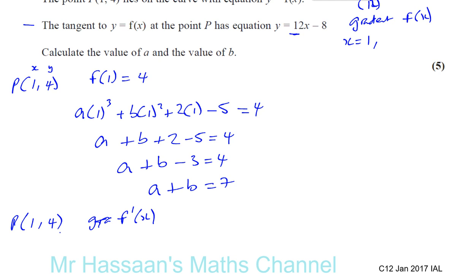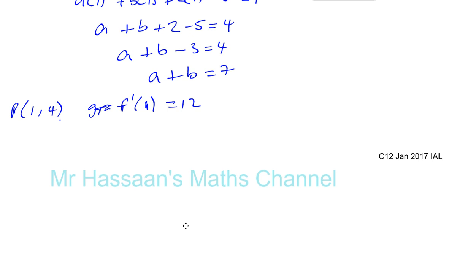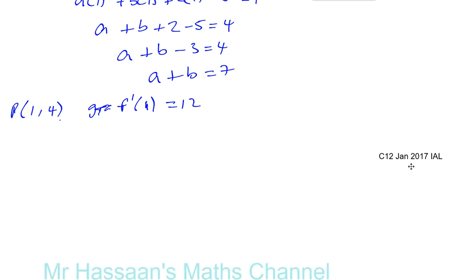If you put 1 into it, you're going to get 12 as your answer. So that's another piece of information that's going to help us to solve this problem. So f'(1) will give us 12 because it has the same gradient as the tangent. So first we've got to find what f'(x) is.